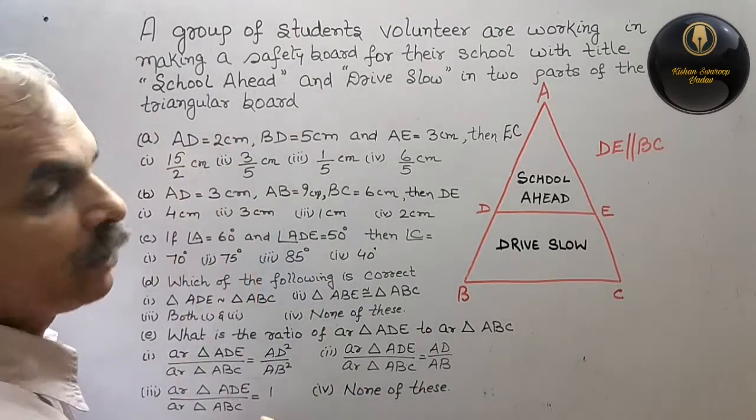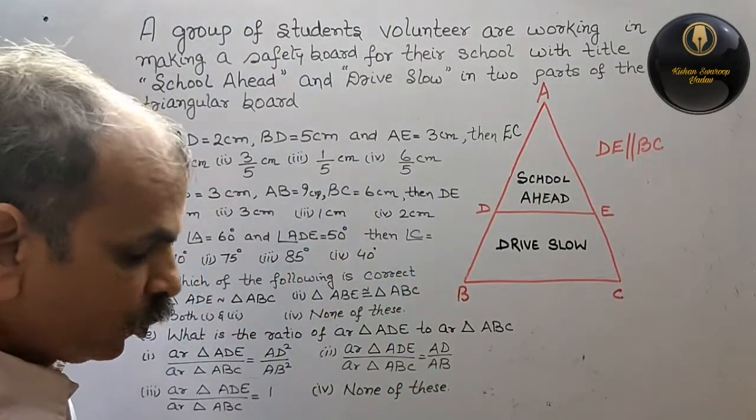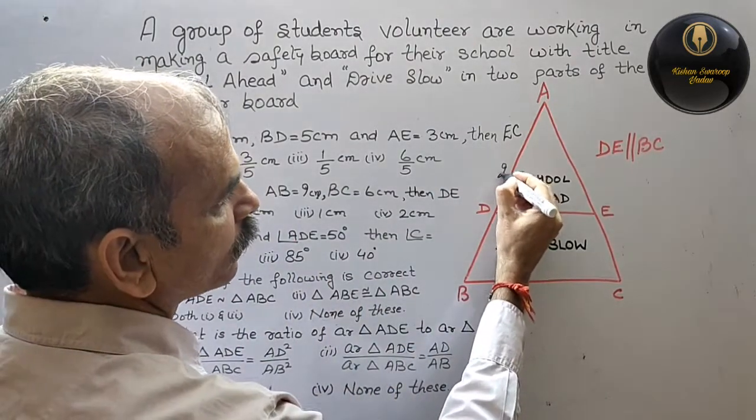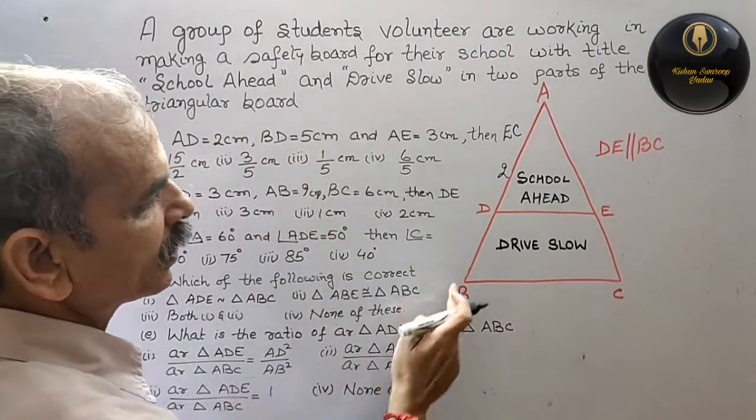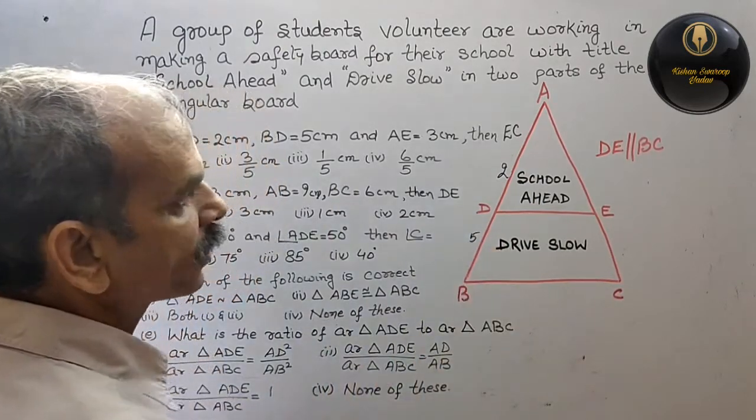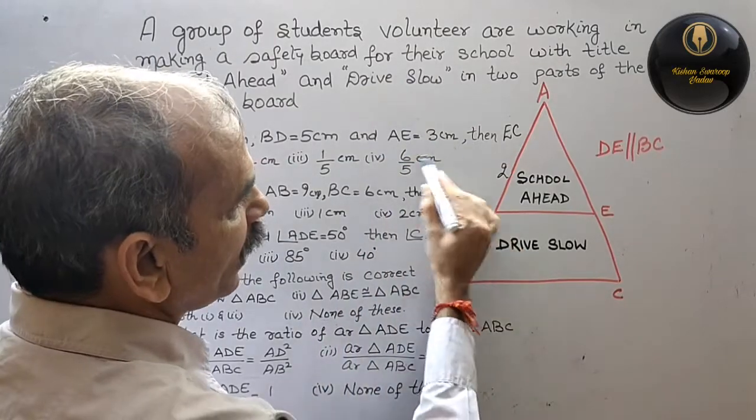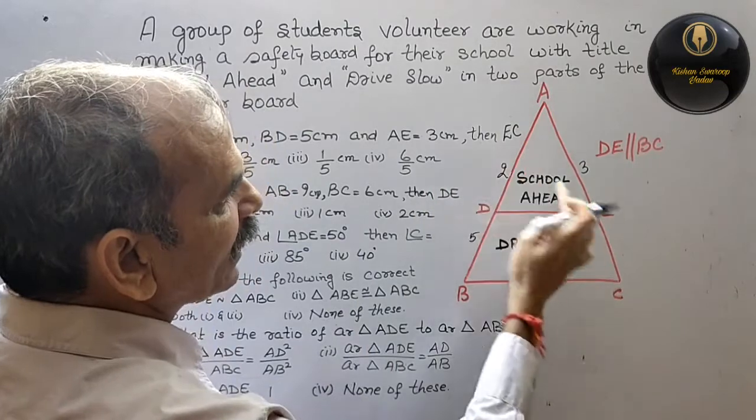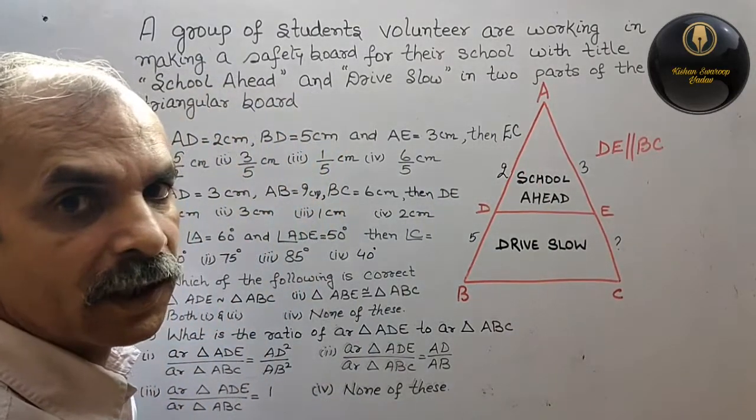AD is equal to 2 cm. A to D is 2. Then BD is 5 cm. That means this part is 5. Then it has said AE is 3 cm. So AE is 3 cm. Then EC is what? That means we have to find out this.